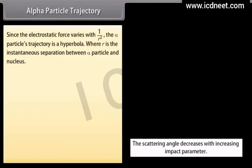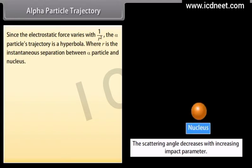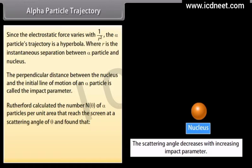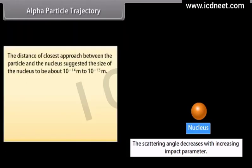Since the electrostatic force varies with 1/R², the alpha particle's trajectory is a hyperbola, where R is the instantaneous separation between the alpha particle and the nucleus. The perpendicular distance between the nucleus and the initial line of motion of an alpha particle is called the impact parameter. Rutherford calculated N(θ), the number of alpha particles per unit area reaching the screen at scattering angle θ, and found N(θ) is inversely proportional to sin⁴(θ/2). The distance of closest approach suggested the size of the nucleus to be about 10⁻¹⁴ to 10⁻¹⁵ meter.